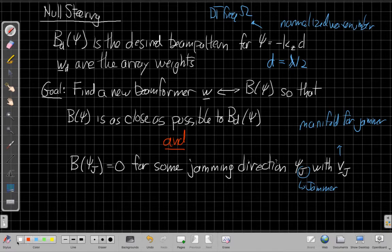What that means is, if we think about it, the beam pattern in general is the array weight inner product with the replica vector in each direction or the manifold vector in each direction. So we're adding a constraint saying the beam pattern is 0, saying I want the inner product of my new weight vector and the manifold vector for the jammer to be 0. That's what gives me the notch, like I showed you in the figure a second ago.